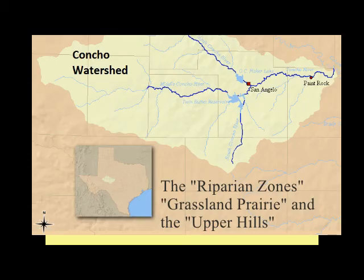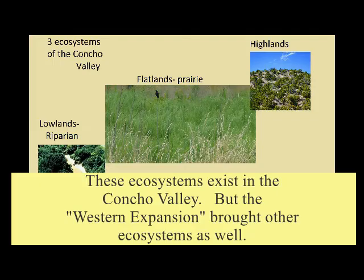The riparian zone, grassland prairie, and upper hill ecosystems all exist in the Concho Valley area.